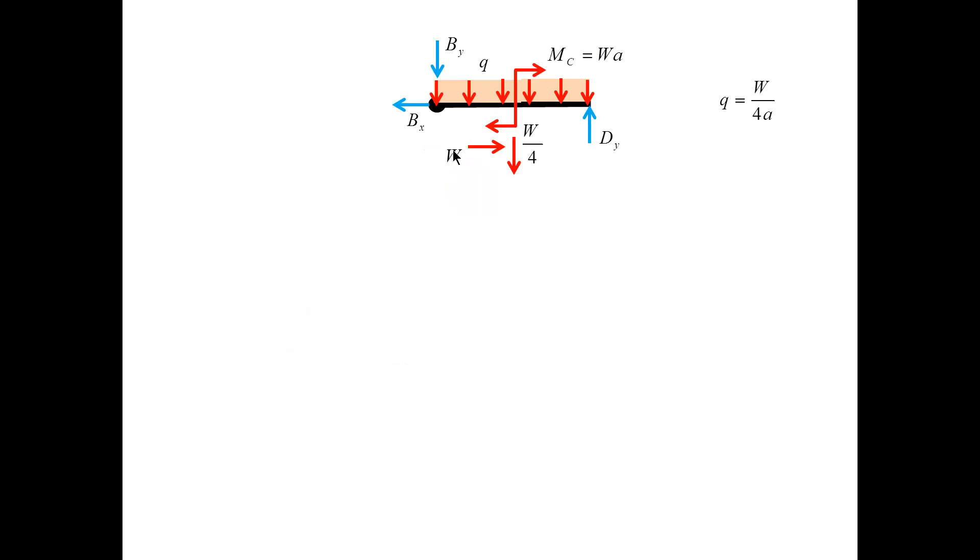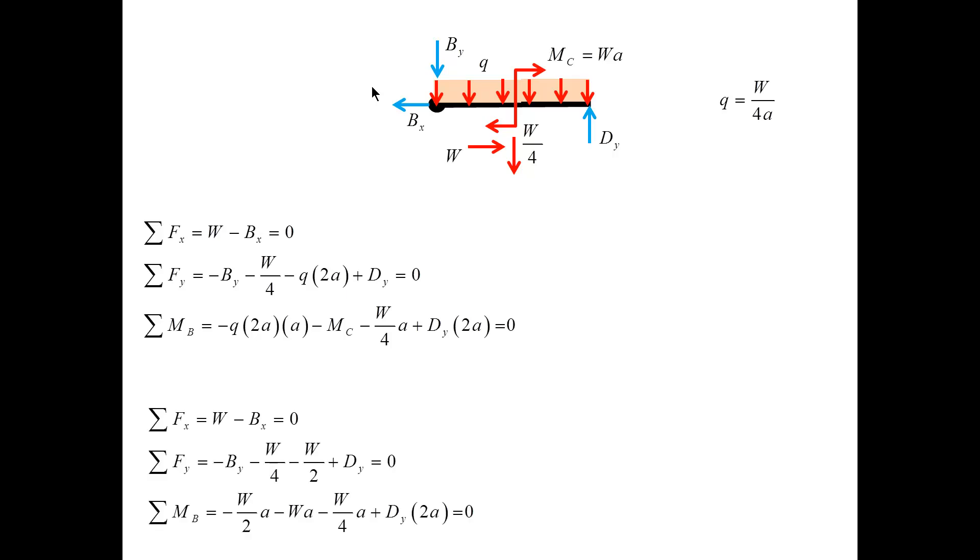Next, I proceed to the free body diagram for the segment B, C, D. So now the forces and the couple at C appear in red, because they have been determined. And we write down equilibrium equations for the forces shown in blue. First, we write it using the distributed load. And then I simply replace Q with W over 4A, so that my equilibrium equations are now written in terms of W rather than Q. And this gives me the answers for the forces at BX, BY, and DY.